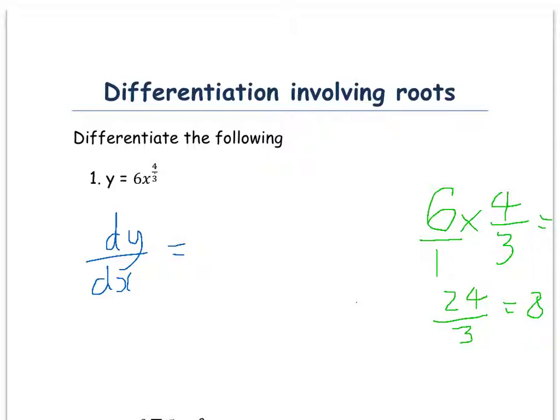So, we can now go back to our answer, and it's 8 times x. Now, we've got to take one off the power. So, 4 thirds minus 1 is like saying 4 thirds take away 3 thirds. So, that leaves us with 1 third.